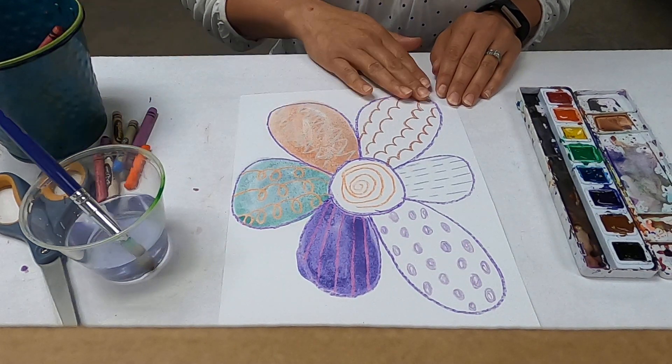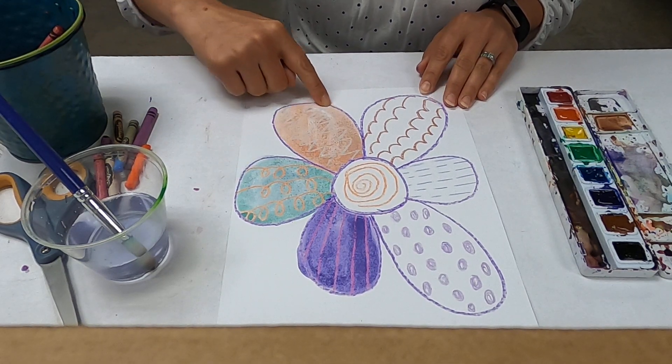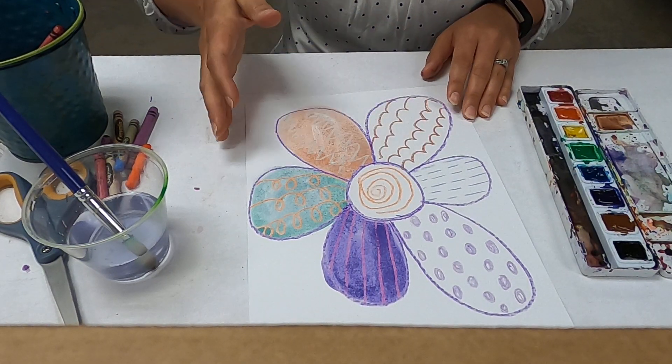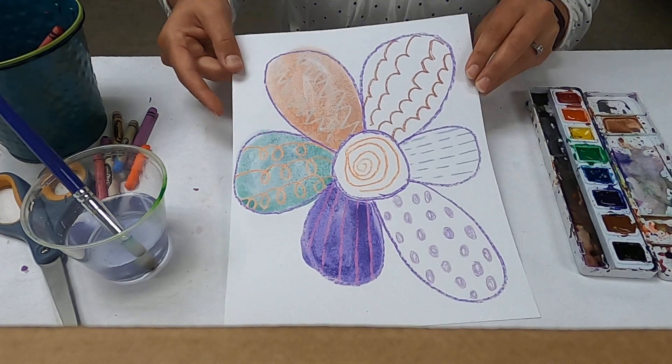So when it's all dry completely, take a pair of scissors and cut out around your flower. You don't have to, but you can make it three-dimensional. Otherwise you can keep it on your piece of paper just like that.